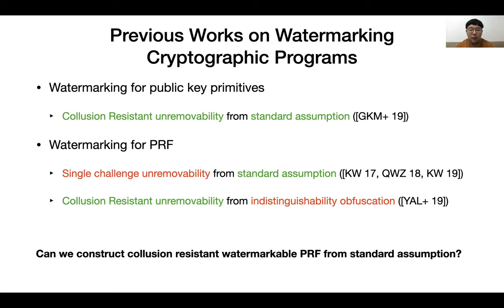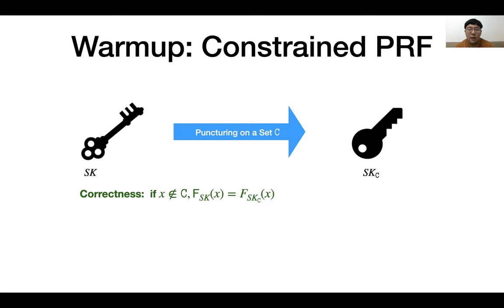So the question is: can we construct collusion-resistant watermarkable pseudorandom functions from standard assumptions? Before presenting our solution to this question, we first recall how watermarkable pseudorandom functions are constructed from standard assumptions in previous works.